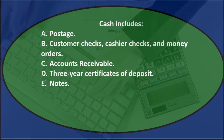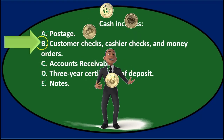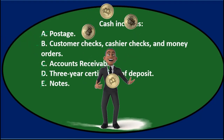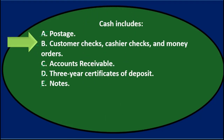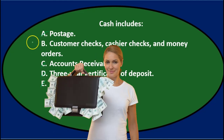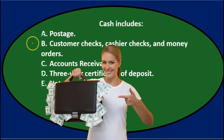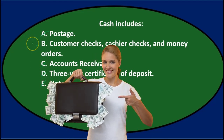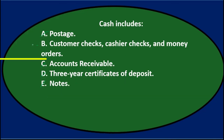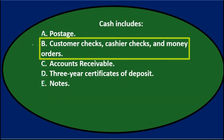So it looks like B is going to be the answer. Cash includes B: customer checks, cashier checks, and money orders — that's a good list of what cash typically includes.